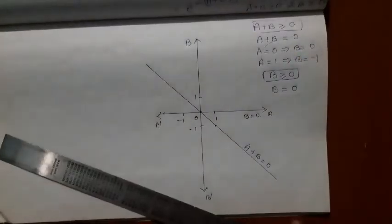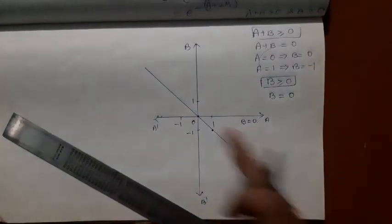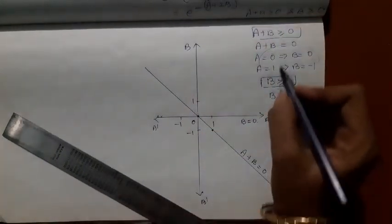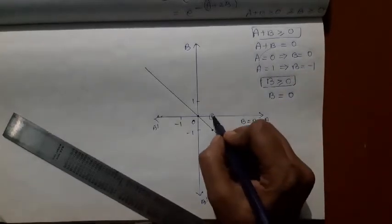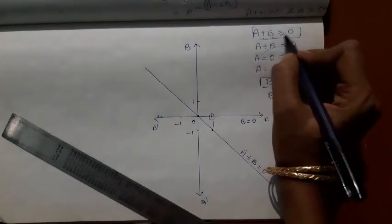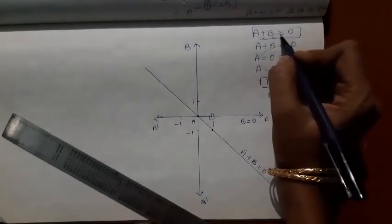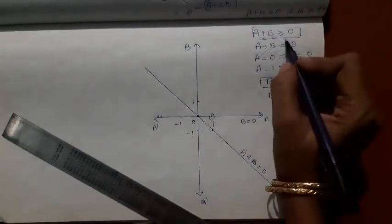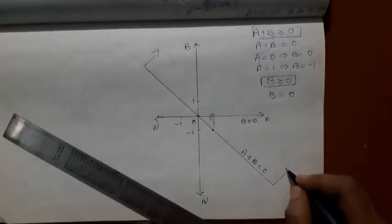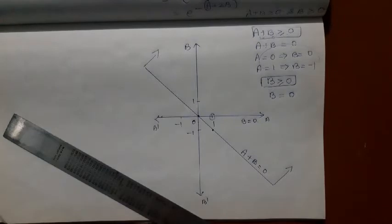The line A + B = 0 divides the plane. Testing the point (1, 0): 1 + 0 = 1 > 0, which satisfies the condition A + B ≥ 0. Since this point is above the line, all points above the line satisfy this condition.